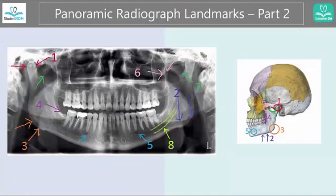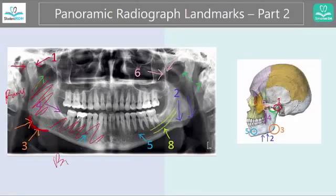Number three: this area is the angle of the mandible. The vertical part is called the ramus and the horizontal part is called the body. This part that joins them together is simply called the angle — you can see number three here.